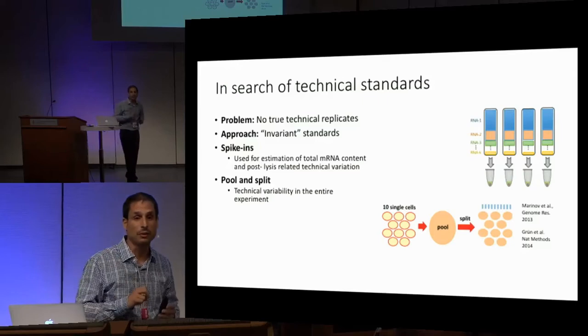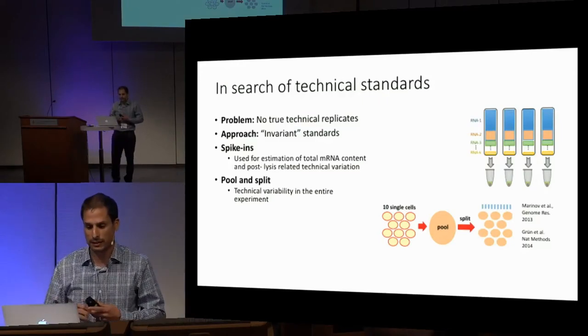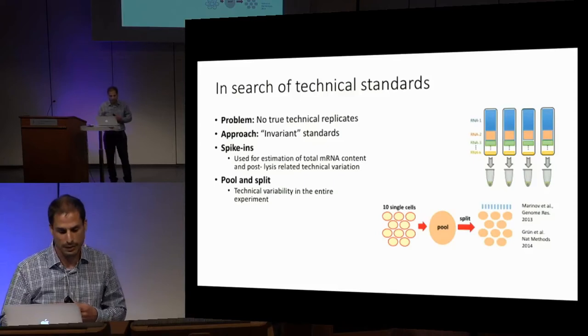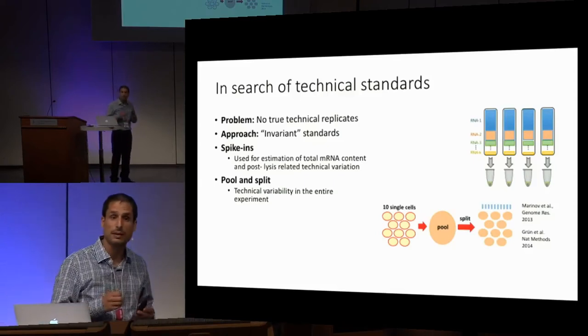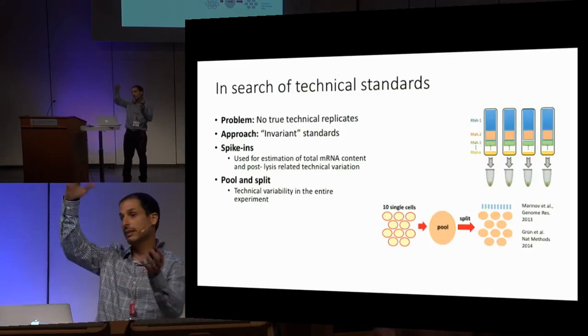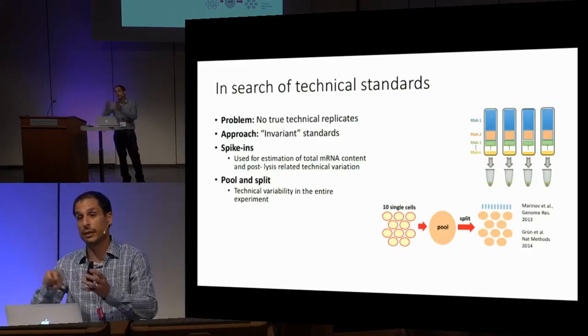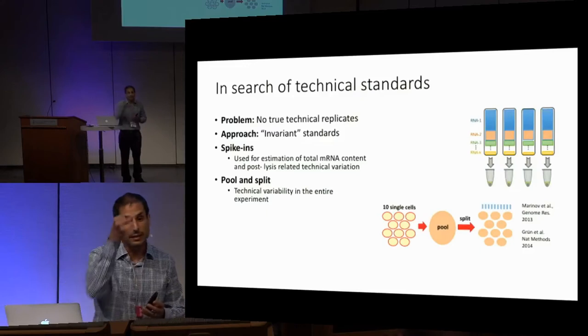Another cool technology introduced quite a while ago, but that didn't really catch on, is the pool-and-split approach. Basically, you take, say, 10 cells, lyse them together, and then separate the mix into 10 wells. The differences between those wells should reflect what technical variability looks like, and this can be taken into account in an analysis.